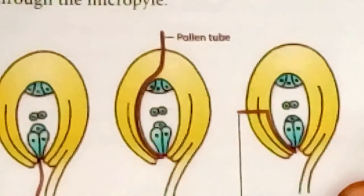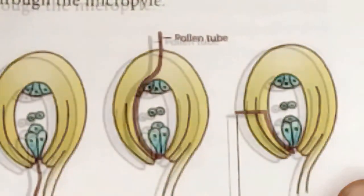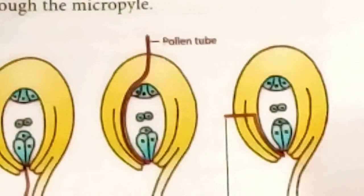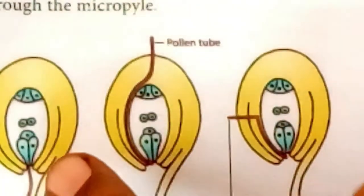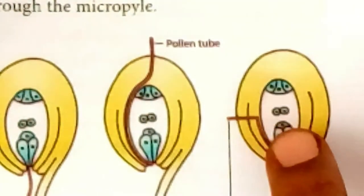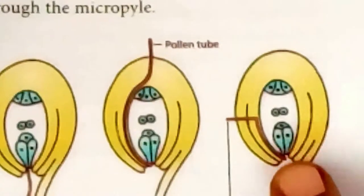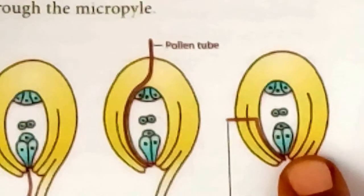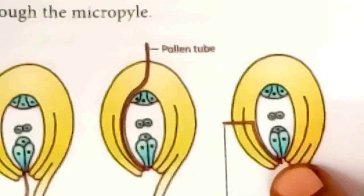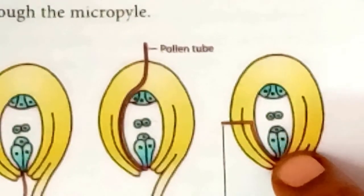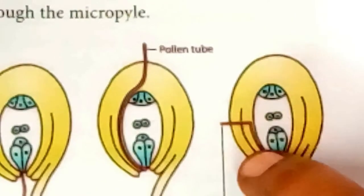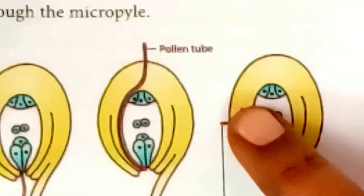Irrespective of where the pollen tube enters the ovule, it always enters the embryo sac through the micropylar end. The pollen enters the embryo sac directly into one of the synergids. The growth of the pollen tube towards the ovule and embryo sac is due to certain chemotropic substances present in the ovule.